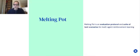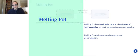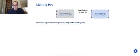What is Melting Pot? Melting Pot is an evaluation protocol and a suite of test scenarios for multi-agent reinforcement learning. Melting Pot evaluates social environment generalization. How does it work? Melting Pot is an evaluation framework. It's not actually opinionated about how you train your agents.